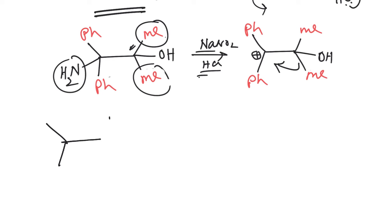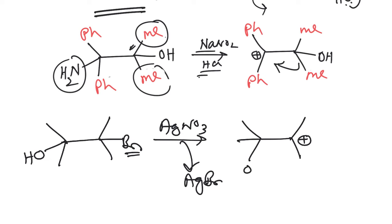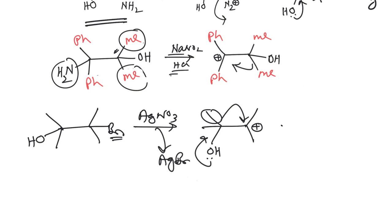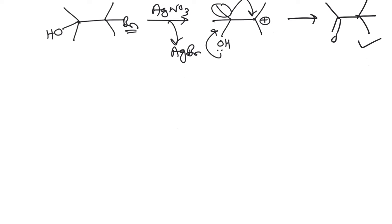Now let us discuss some more examples. Let's say you have a substrate with bromine on one side and OH on the other, and you treat this with AgNO3. Silver will take the bromine and form a silver bromide precipitate. You are now left with this carbocation. The OH will push, the methyl group will migrate, and you will get the rearranged product. This is also a semi-pinacol rearrangement.